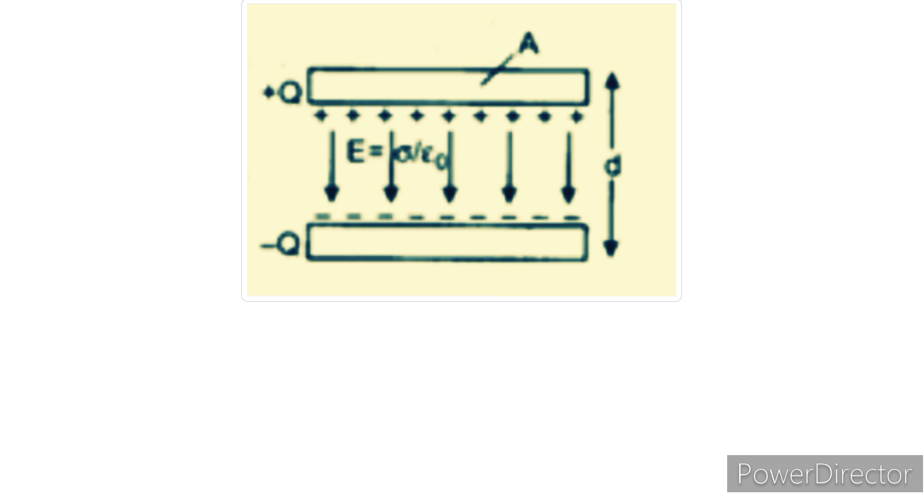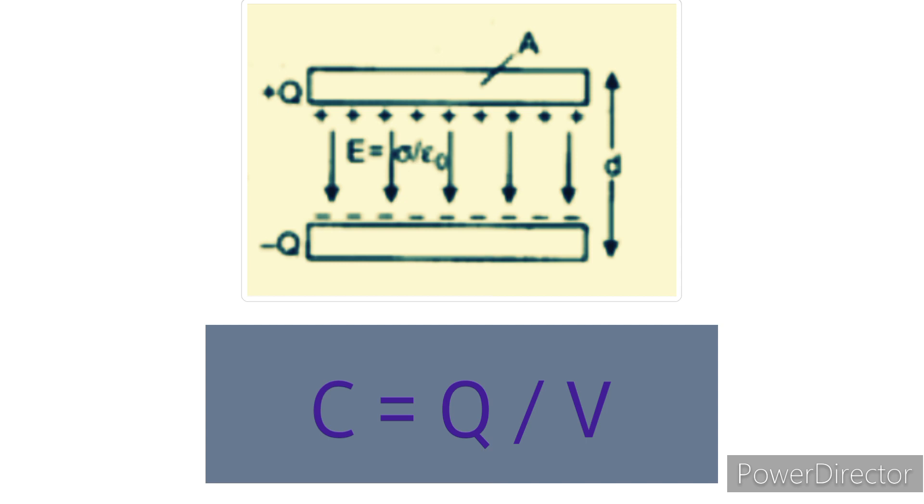Now by the definition of capacitance, C equals Q divided by V. From the relation between electric potential and intensity of electric field, V equals E times D.